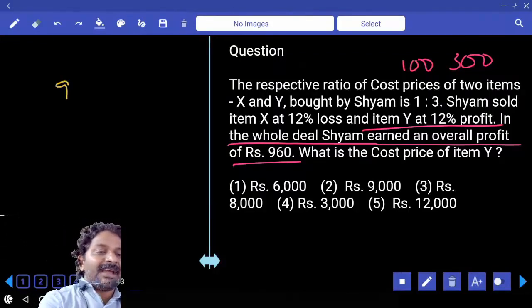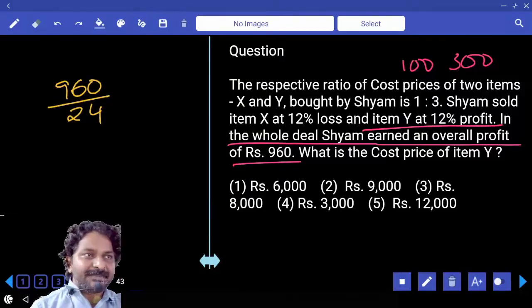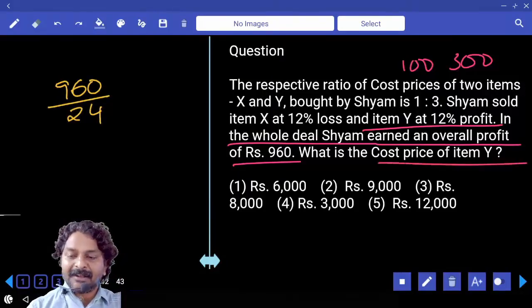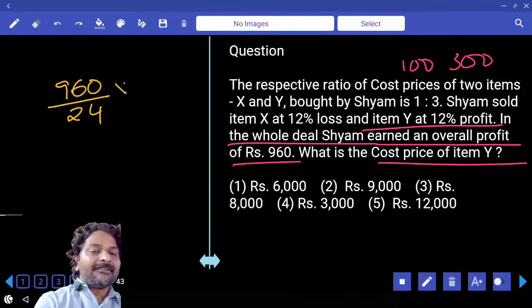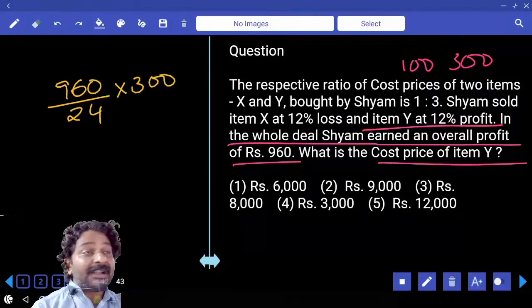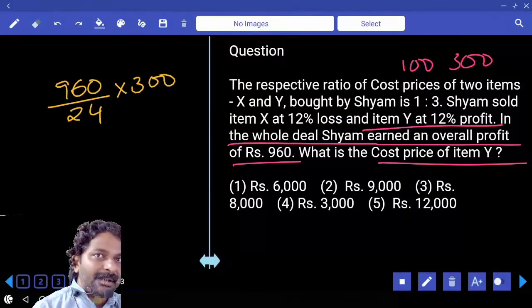That means 960 value equals 24%. One percentage is 960 divided by 24. And the cost price of item Y is 300. So multiply by 300. We started with 100 and 300.